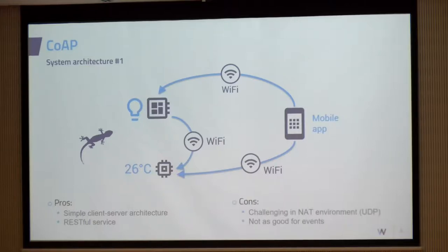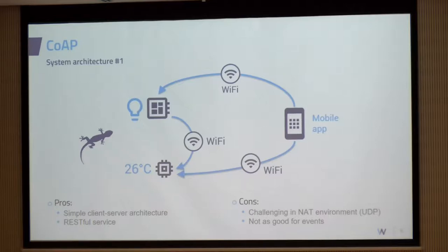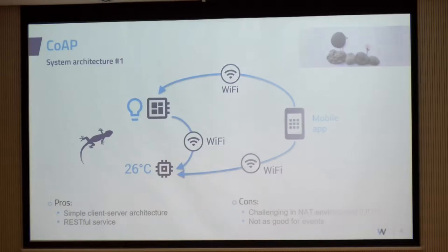On the cons side, the main one is really the NAT challenge. Because it uses UDP, you will not be able to reach from the internet back to your home using UDP protocol, since there is no active connection. And it's not as good for events as MQTT — we'll see there is the observe feature for that. But if your system is mainly based on events, that's not necessarily the best solution.